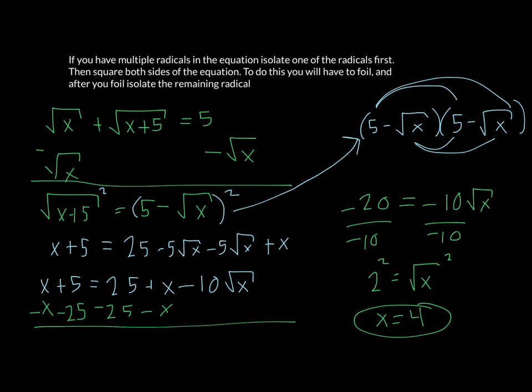Now we do need to check it back into our original equation. So we have the square root of 4 is 2. The square root of 4 plus 5, that's 9. Square root of 9 is 3. Is 2 plus 3 equal to 5? It is. So x equals 4 is my answer.